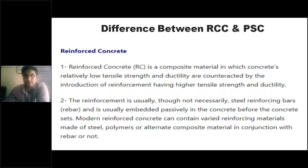Combining together, we call it a composite material, where concrete can take care of compression forces and steel can take care of tensile forces. Concrete has relatively low tensile strength. As concrete is a brittle material, its low tensile strength and ductility are going to be countered by introducing reinforcements into the concrete. That is how we learned reinforced concrete structural elements.